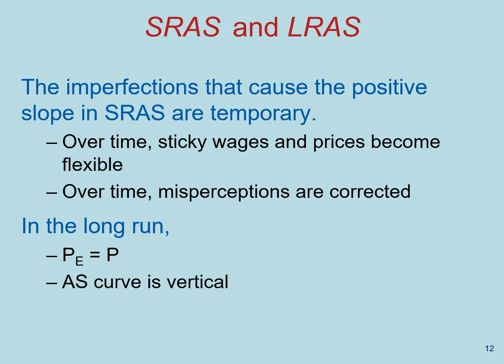Now, all the imperfections that cause this difference between the expected level of prices and the price level are temporary. Over time, sticky wages and prices become flexible. Over time, misperceptions are corrected. So in the long run, the expected level of prices equals the price level and the aggregate supply curve is vertical.